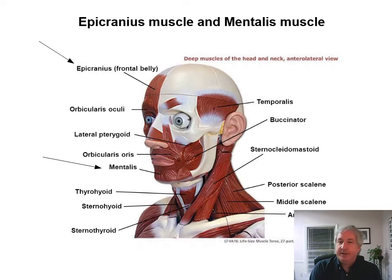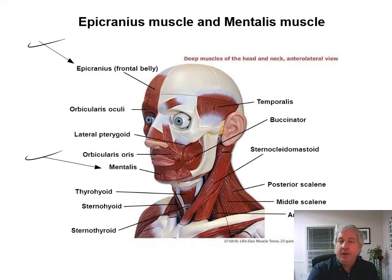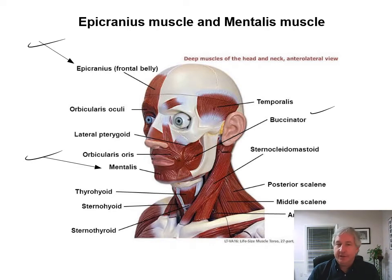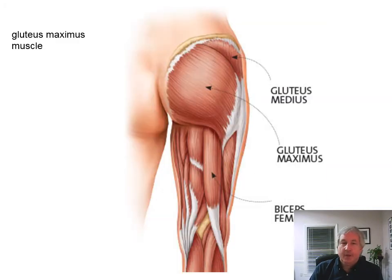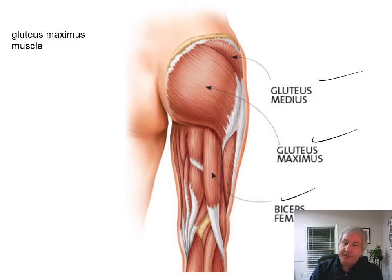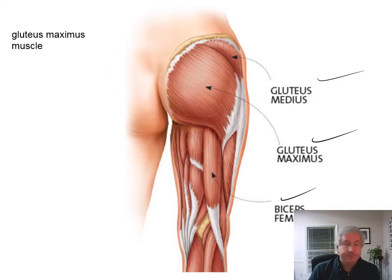Here's another view of the epicranius and mentalis muscles. The epicranius is up here with the frontal belly in the frontal/cranial region. The mentalis is on the chin region. We also have the buccinator, which goes to the buccal region — the cheek. And the orbicularis oculi relates to the orbital or ocular region. More examples of how knowing regions helps you learn these structures. The gluteus maximus and medius are in the gluteal region, and the biceps femoris is in the femoral region.